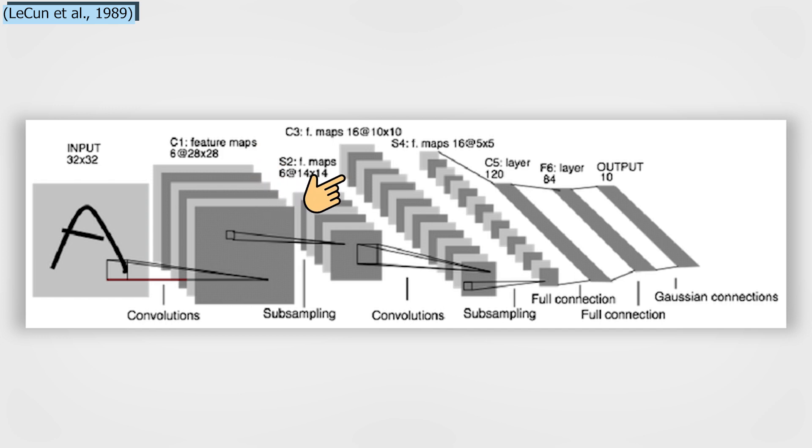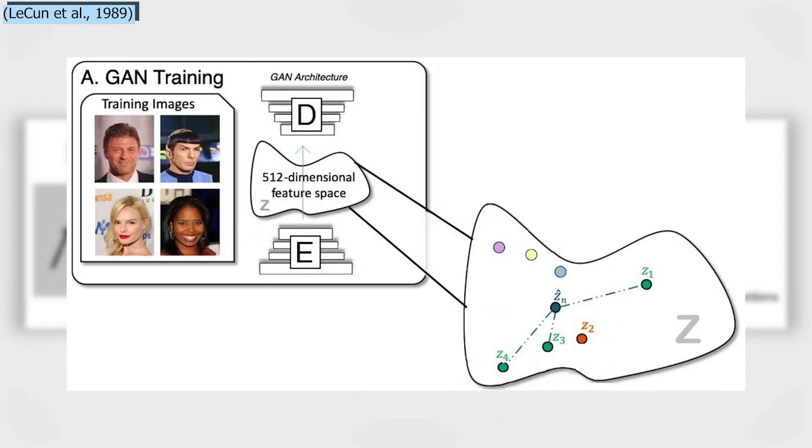The deeper we get into the network, the smaller these feature maps get because of the nature of convolutions, and the more general the information of these feature maps become, until it reaches the end of the network with extremely general information about what the image contains disposed over many feature maps, which is used for classification, or to build a latent code to represent the information present in the image, in the case of a GAN architecture to generate a new image based on this code, which we refer to as encoded information.